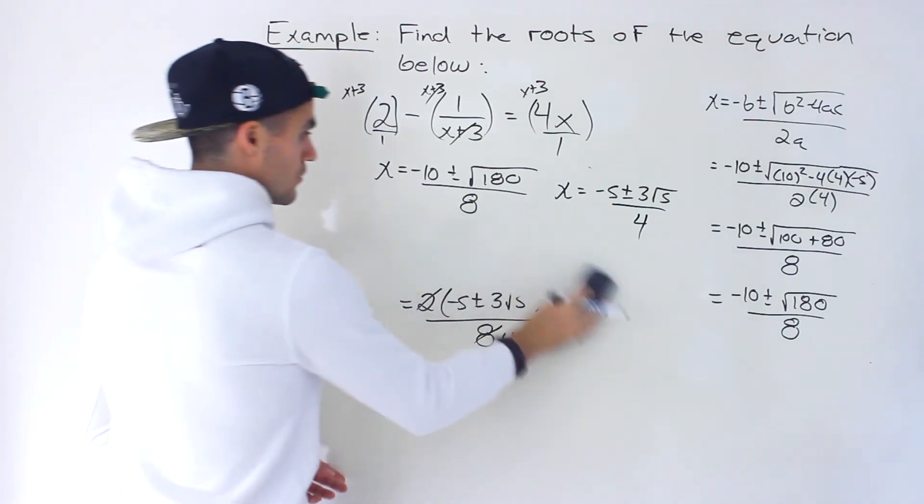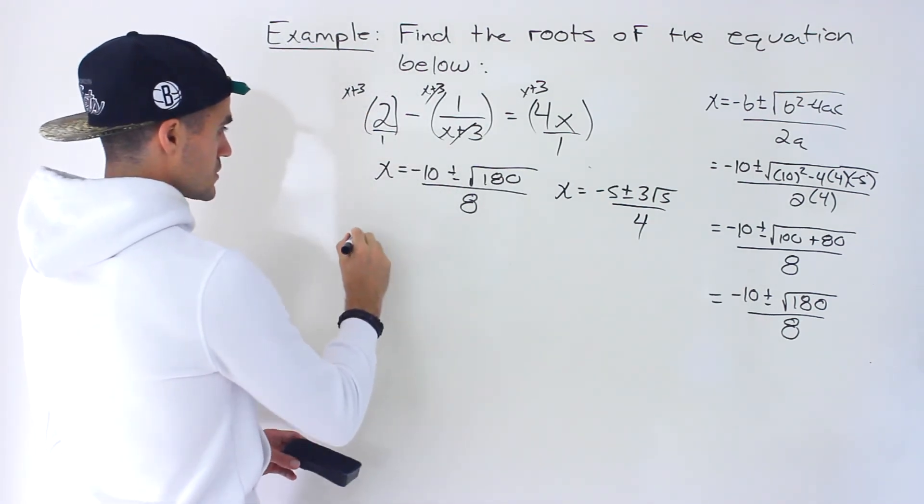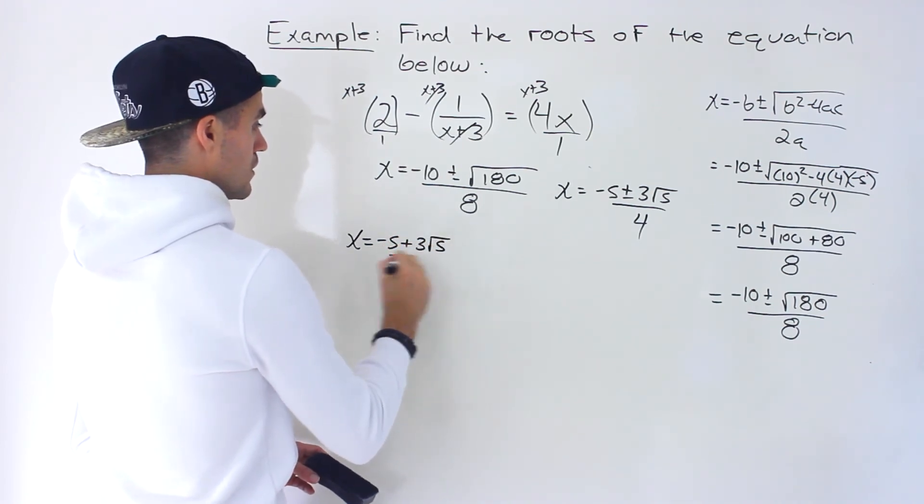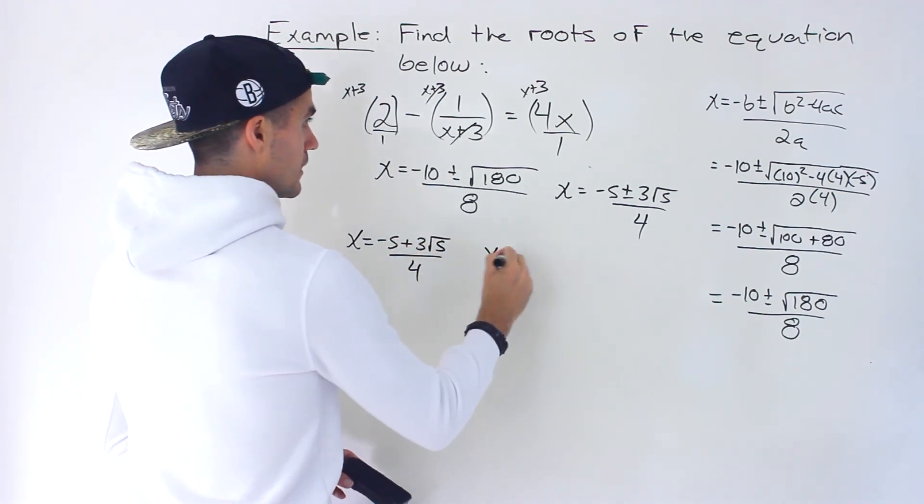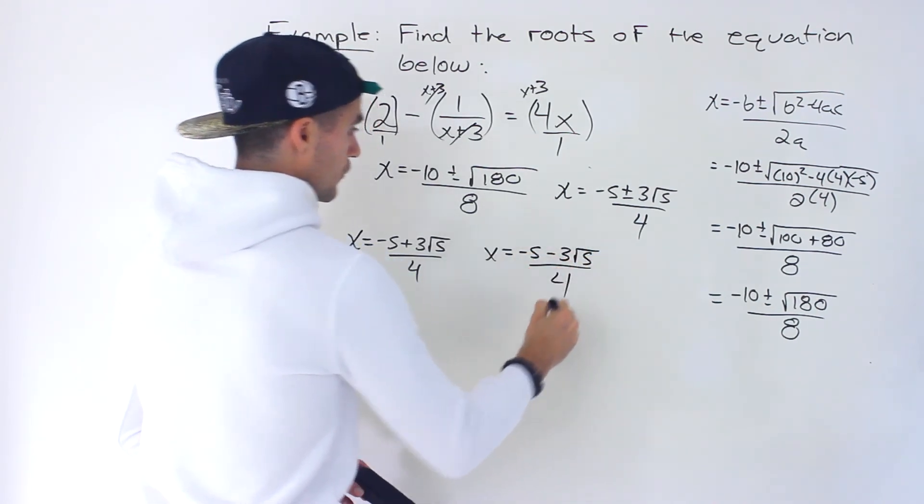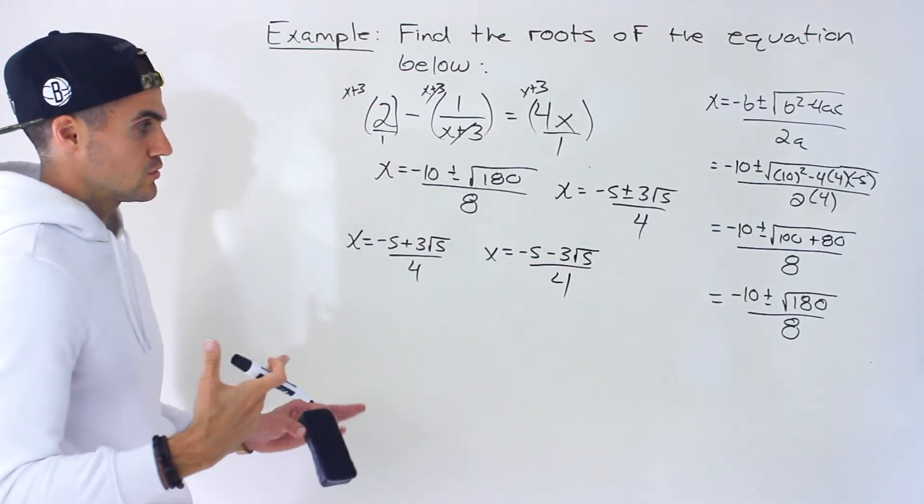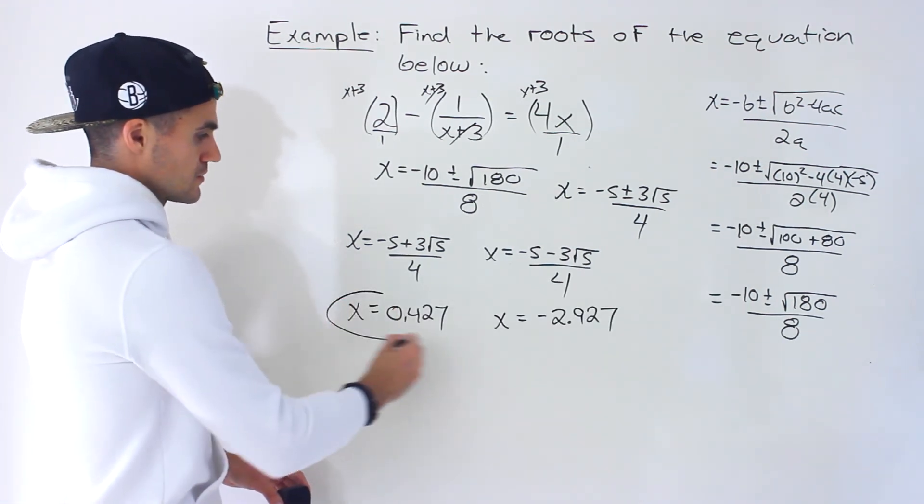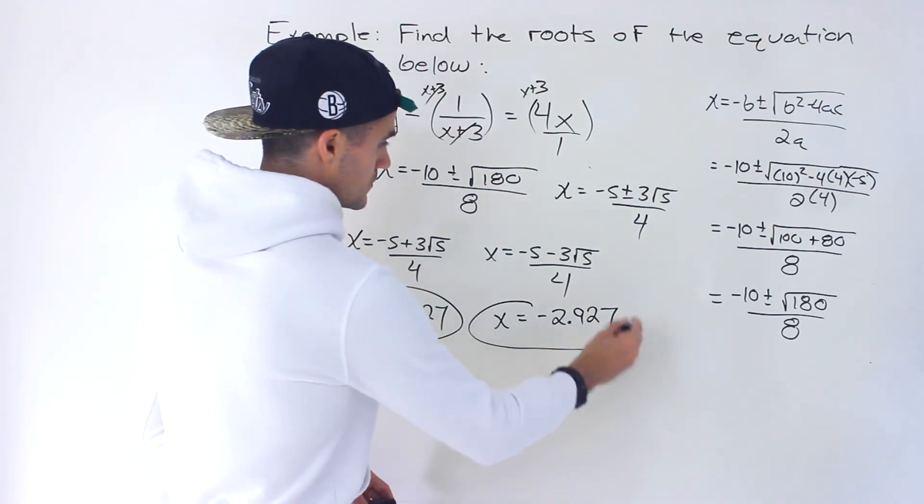So the 2 solutions would be negative 5 plus 3 root 5 over 4 and then negative 5 minus 3 root 5 over 4. Those are the 2 exact value solutions. And then if you want the corresponding decimals we'd end up with these values right here.